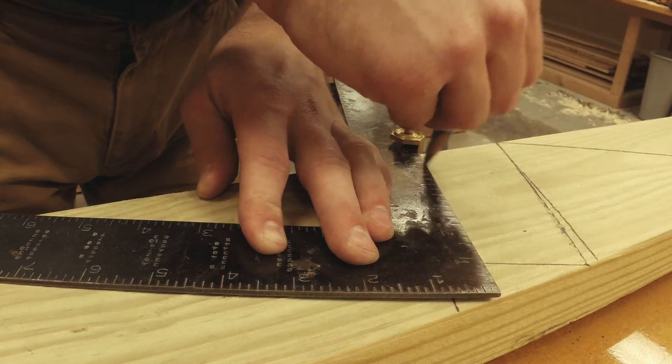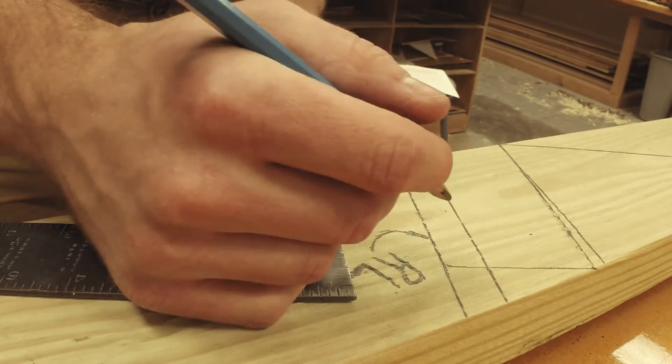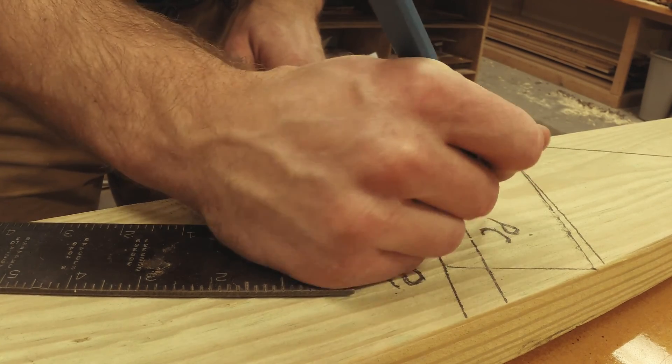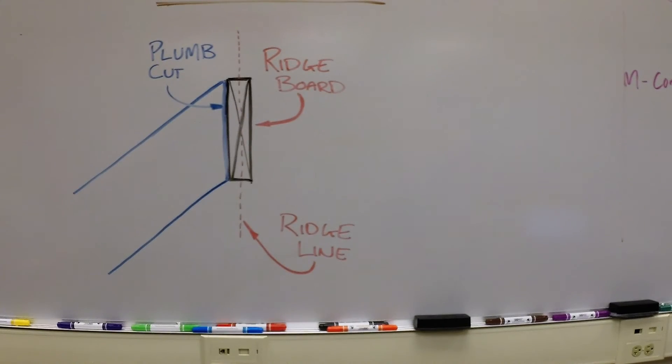The rafter on the other side of the gable will account for the other half of the ridge board's thickness. The plumb cut is the line you'll eventually cut when the time comes.